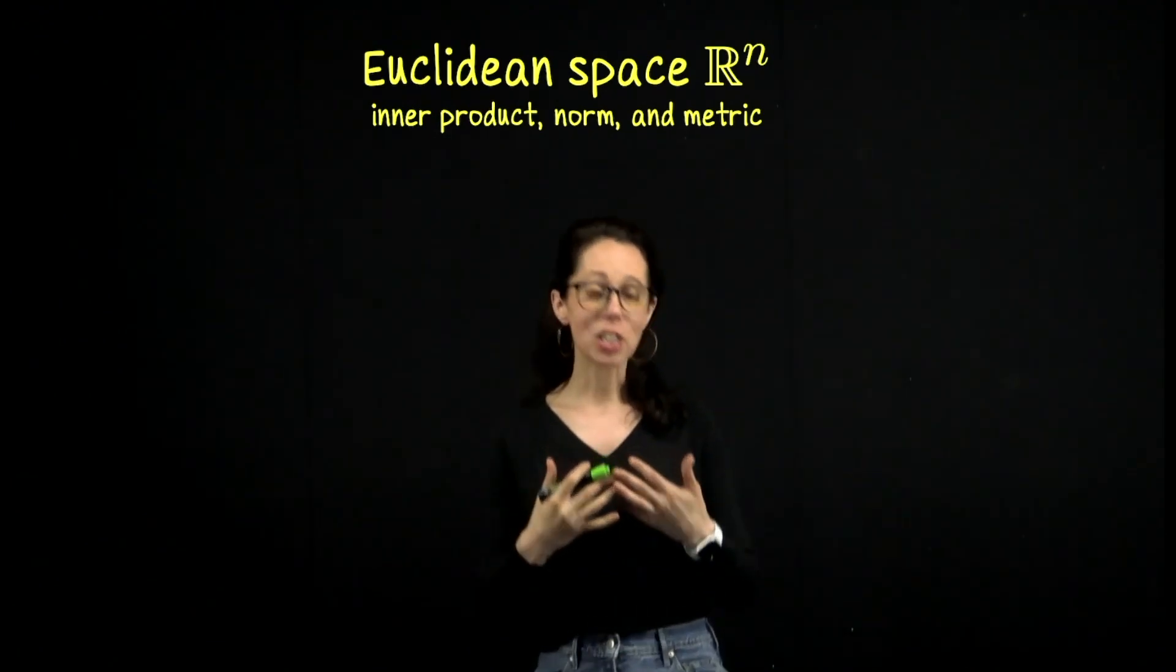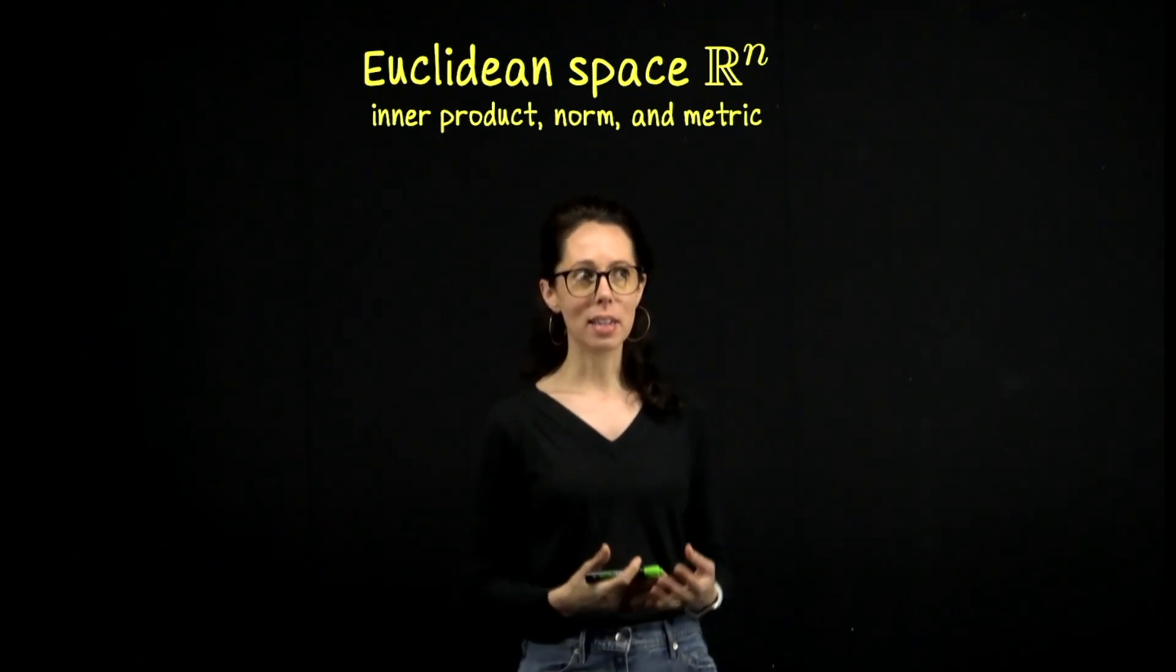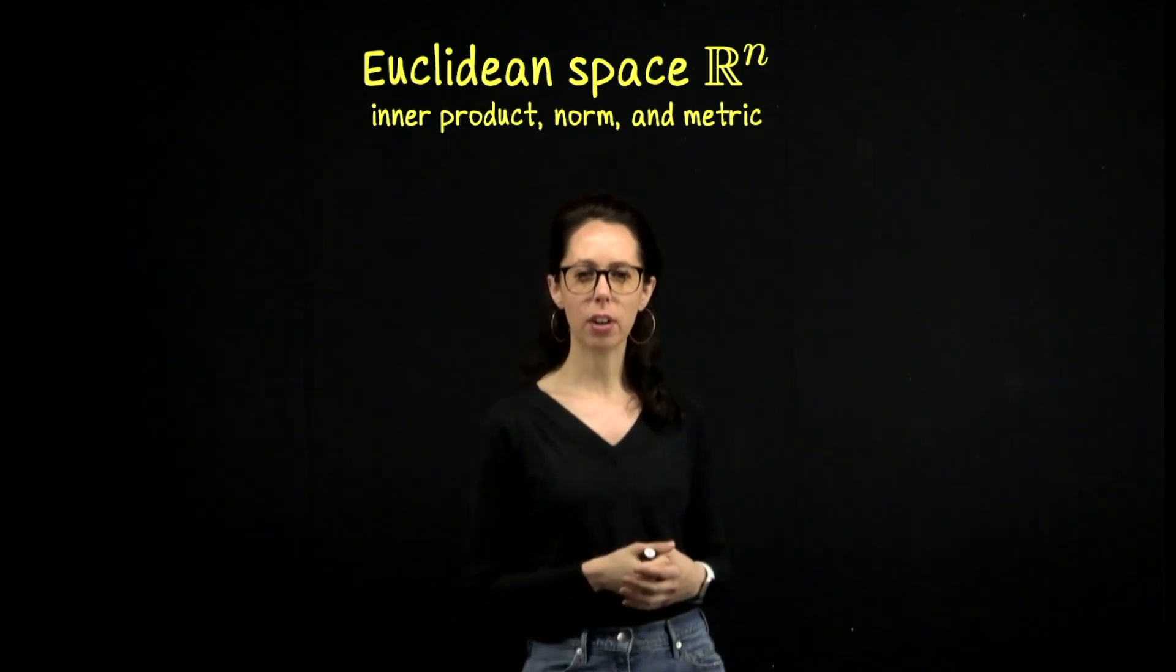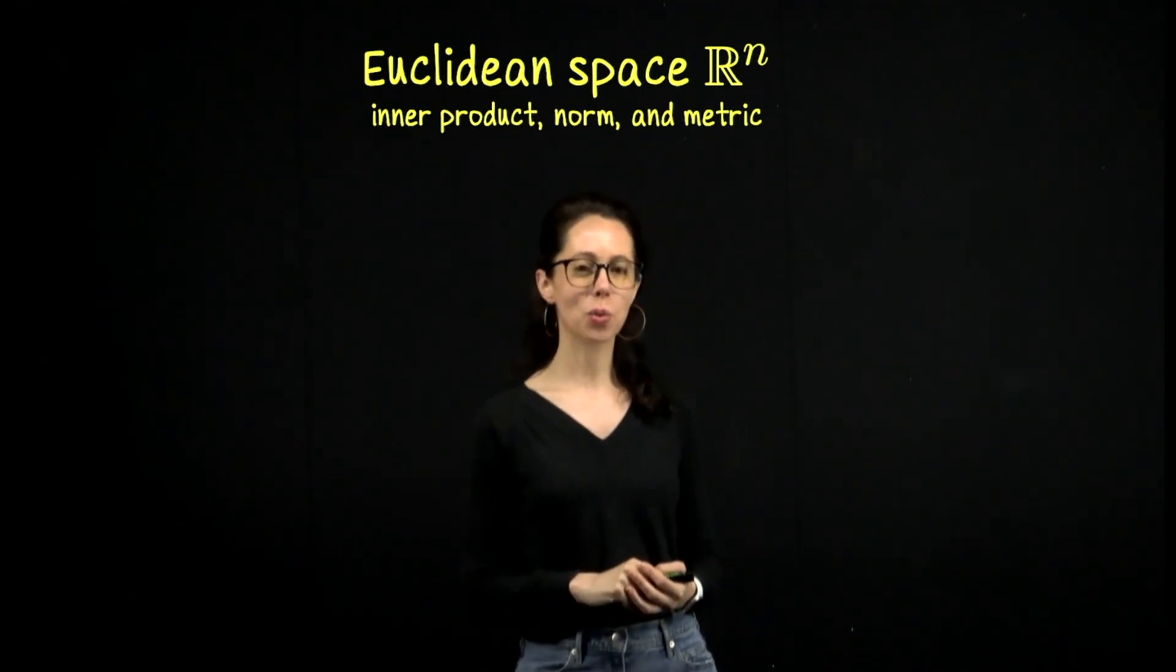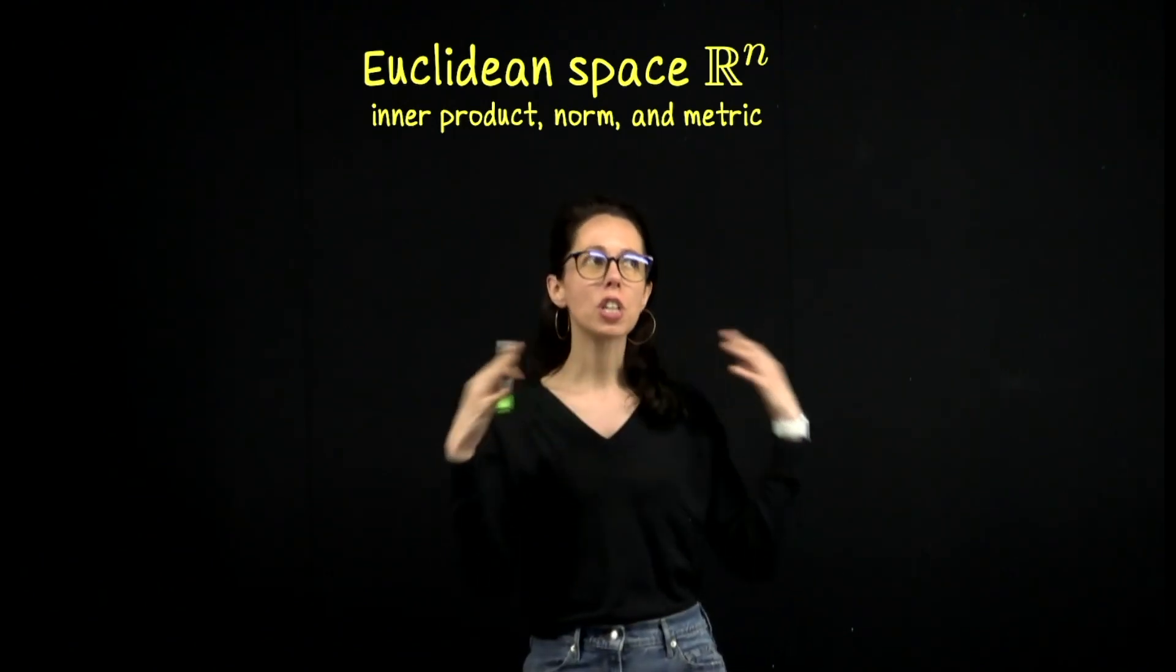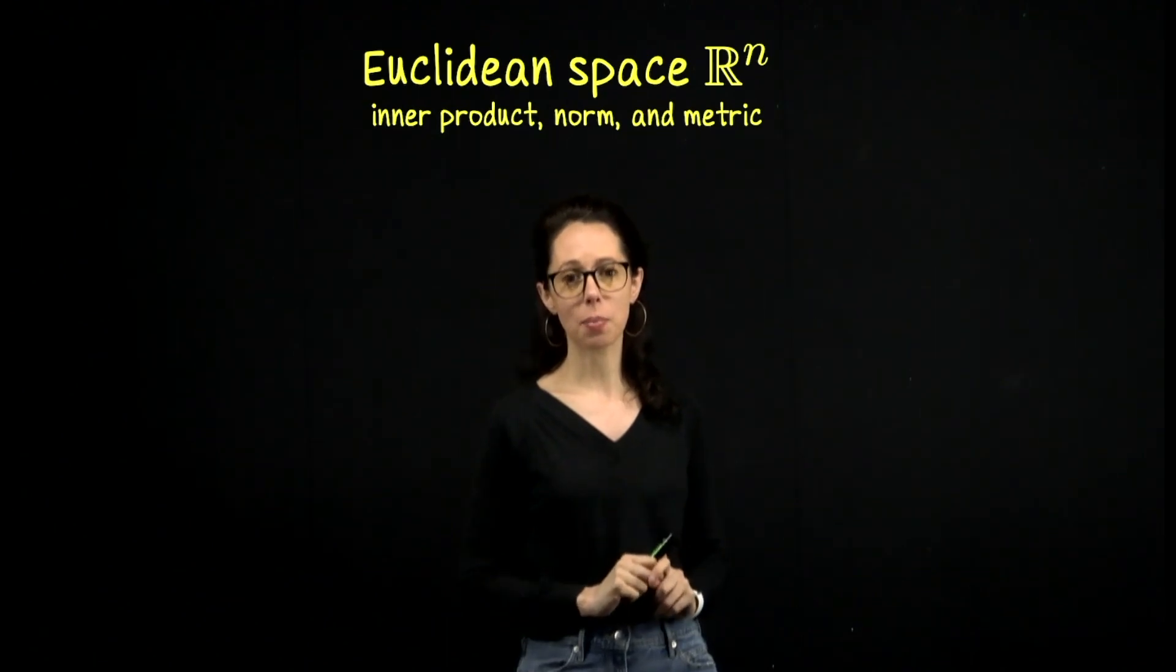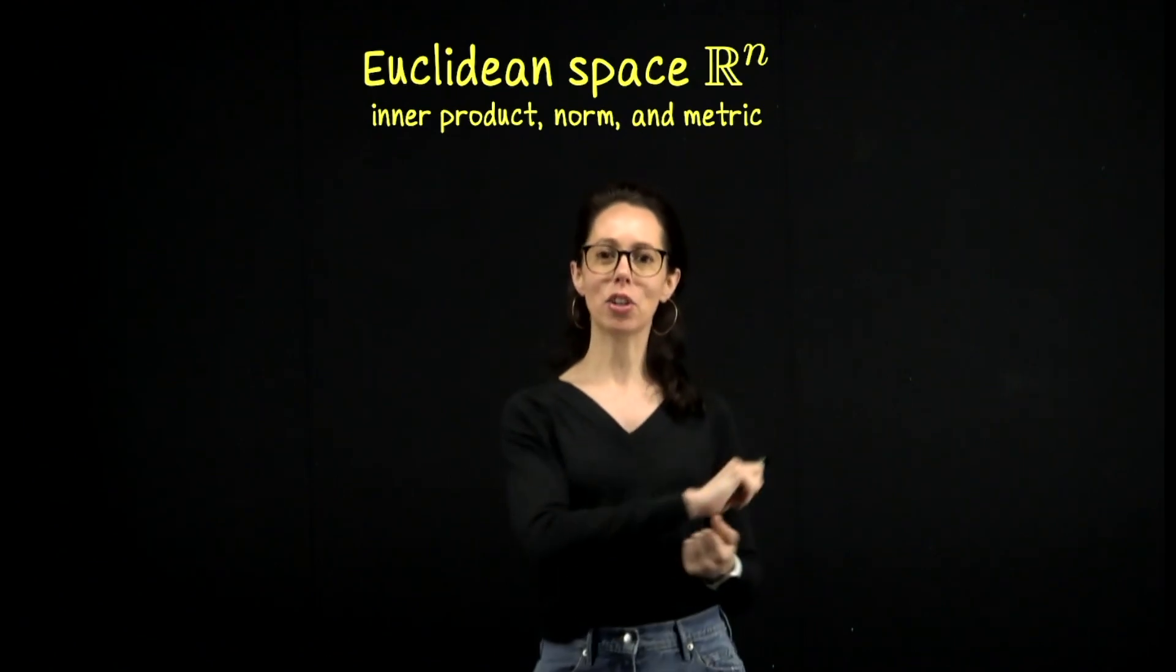I'm going to define those in the context of Euclidean space. They might be computations you've already seen before, particularly in multivariable calculus. But I want to kind of point them out again, specifically for R^n, and also connect them to each other. Because in the next few videos, what we are going to do is look at a more generalized notion of space. So we won't always be in Euclidean space R^n, but we'd still like to have equivalent ideas of inner product, norm, and metric.